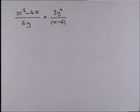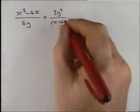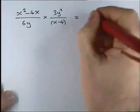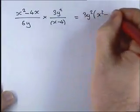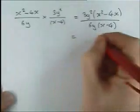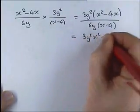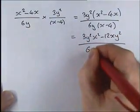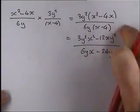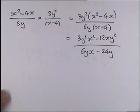Here's one for you to do. Pause the video and try it before I show you the answer. You could write it as 3y squared times (x squared minus 4x) over 6y times (x minus 4), and then multiply out the brackets to get 3x squared minus 12xy squared over 6xy minus 24y. That is the same answer, but it looks a lot more complicated. What we're trying to do is simplify answers where possible, not complicate them.